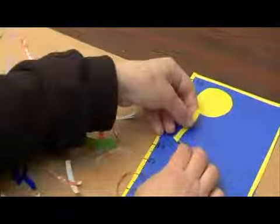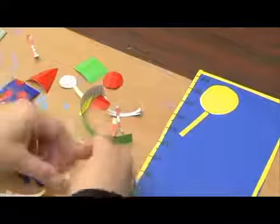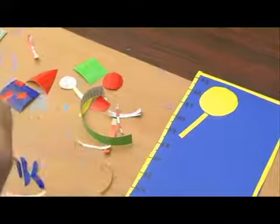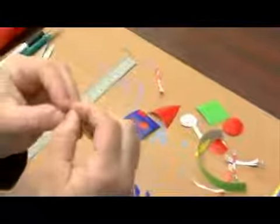I'm going to make a nice bright sunshine in the corner of the board using my yellow circle and the long yellow strips.